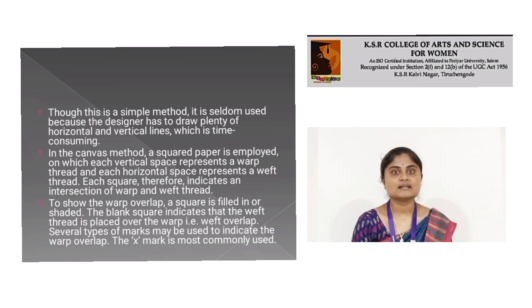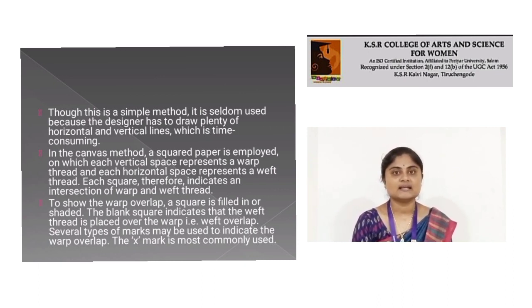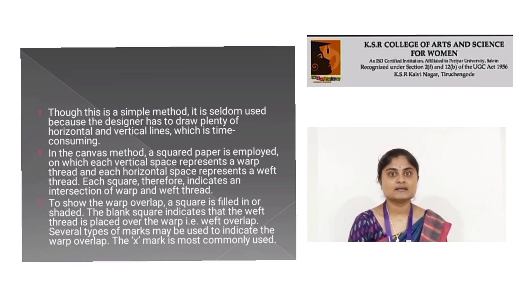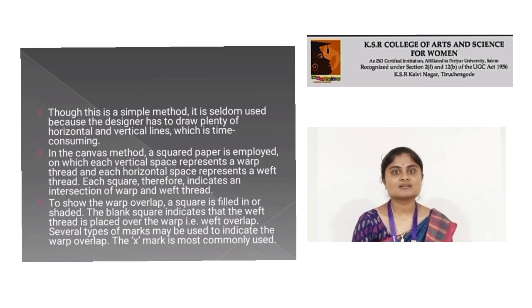Though this is a simple method, it is seldom used because the designer has to draw plenty of horizontal and vertical lines, which is time consuming. In the canvas method, a squared paper is employed in which each vertical space represents a warp thread and each horizontal space represents a weft thread. Each square therefore indicates an intersection of warp and weft thread. To show the warp overlap, a square is filled in or shaded. A blank square indicates the weft thread is placed over the warp.